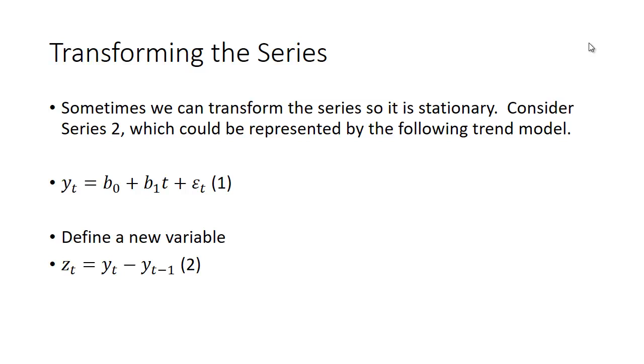Well, suppose we look at Series 2, which could be represented by some sort of trend model. So a trend model is the case where our variable of interest, we're simply going to be estimating something like a constant plus some coefficient times time. So it's trending up over time, and then there's going to be an error term epsilon_t. Let's call that equation (1).